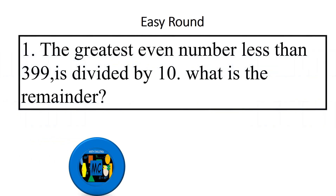The greatest even number less than 399 is divided by 10. What is the remainder?